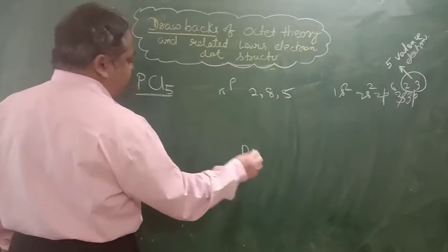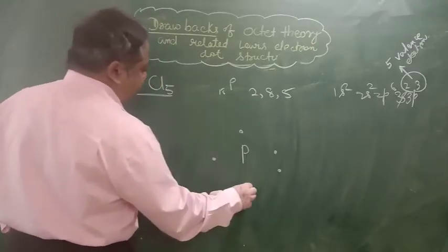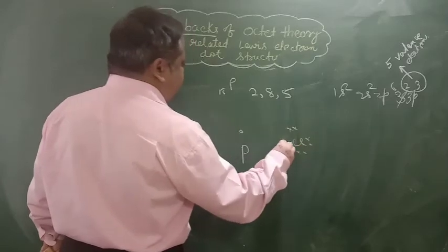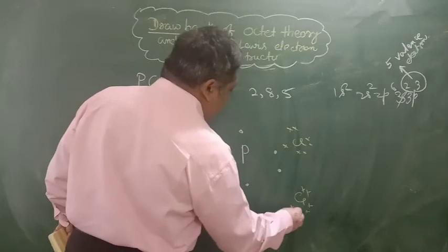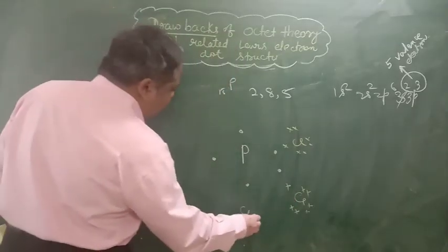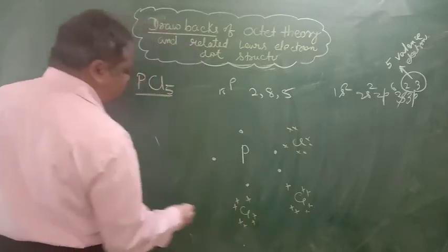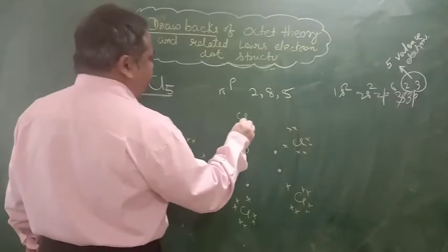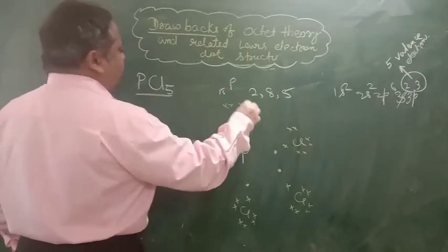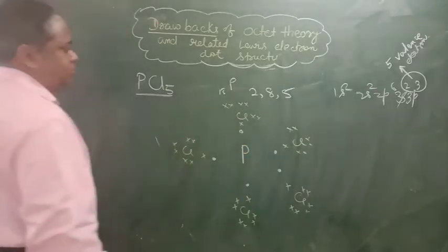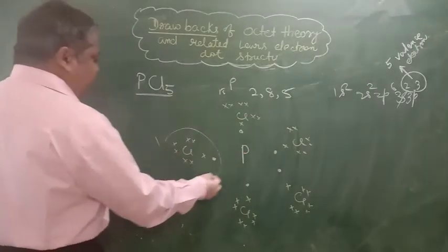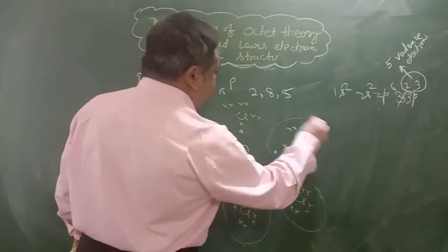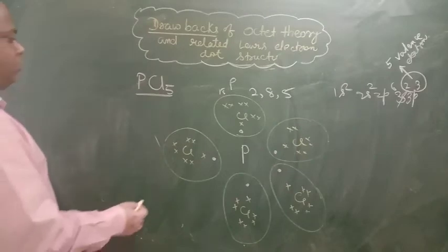So if you write all 5 valence electrons like this, and bring chlorine: 1, 2, 3, 4, 5, 6, 7. 1, 2, 3, 4, 5, 6, 7. 1, 2, 3, 4, 5, 6, 7. 1, 2, 3, 4, 5, 6, 7.